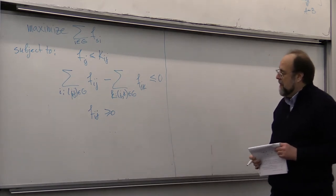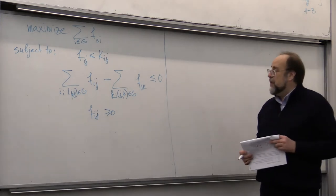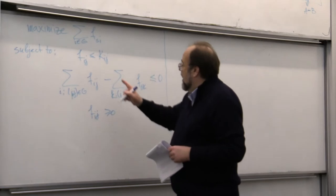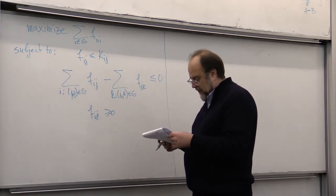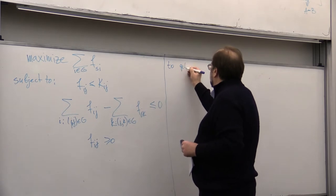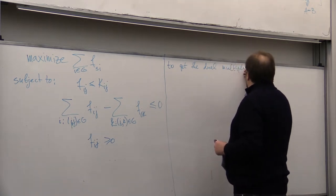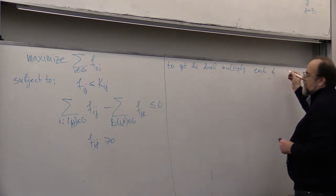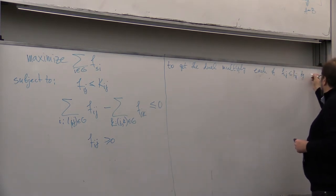let us see what the dual problem for this problem is. So, what we are going to do is, we are going to multiply each of these inequalities by new variables. Dij. So, to get the dual,